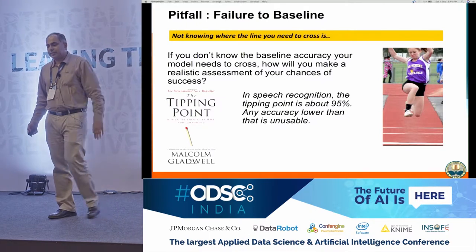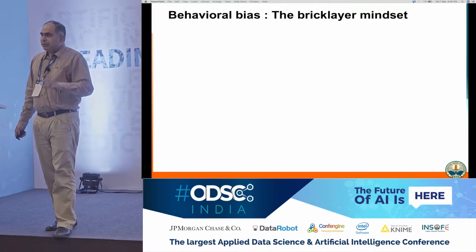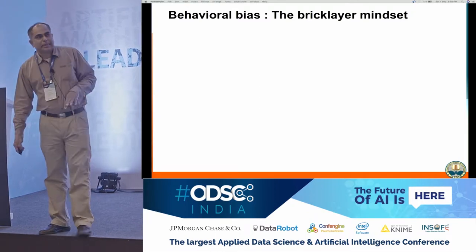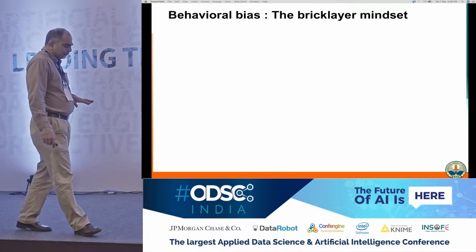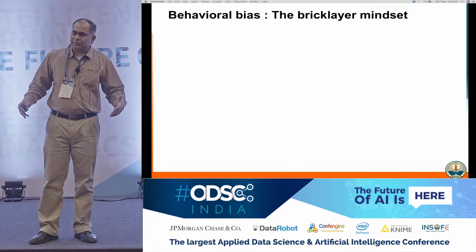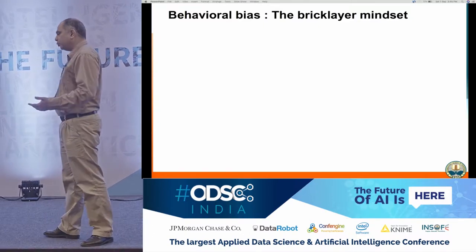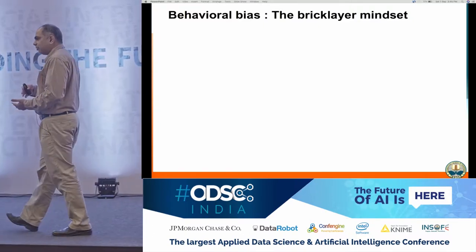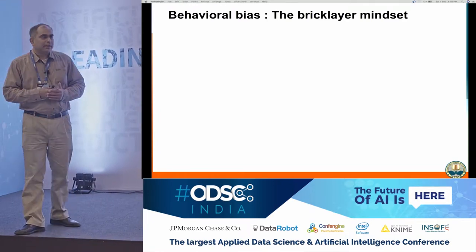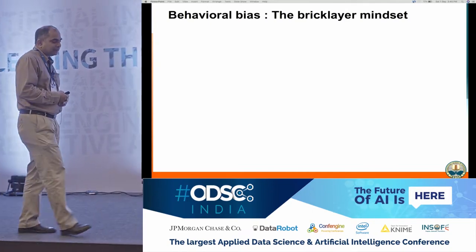Now let's say you've identified the baseline — what next? You need to get a team on board. When we talk about data scientists, we typically think of people who know a mix of math and programming — those are the two skills we look at. But it's also the attitude that matters. A data scientist is not just a software engineer plus a mathematician — it's somebody who also has the right attitude to solve and formulate a business problem.